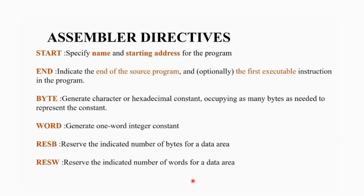Before calculating the location counter value, we should know the assembler directives. There are six different basic assembler directives. The first one is START. START specifies the name and starting address for the program. For example, if I have an instruction 'SUM START 0', START is the assembler directive, SUM is the program name, and 0 is the starting address of that program.